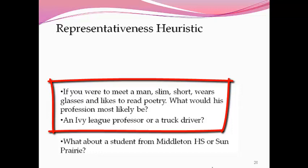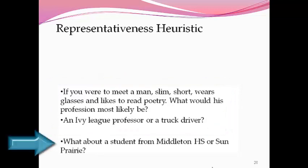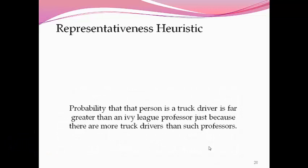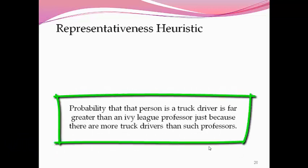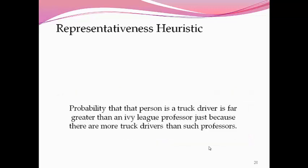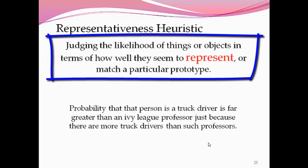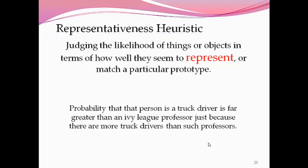How about if we met a student from Middleton High School or Sun Prairie High School — that's all we knew about that person? What would we think about them? Well, the probability that the first person is a truck driver is far greater than an Ivy League professor, because there are hundreds of thousands more truck drivers than Ivy League professors. Basically, representative heuristics involve judging the likelihood of things and events in terms of how well they seem to represent or match our prototypes, and it may lead us to ignore other important information, such as statistics.